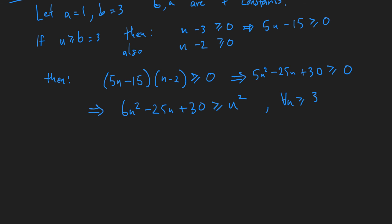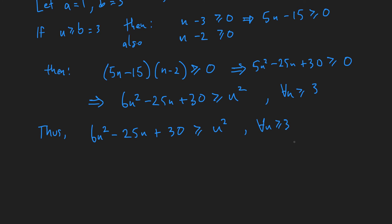So we'll say thus, 6n squared minus 25n plus 30 is greater than or equal to n squared. We kind of have to reiterate here, trying to be a little bit more formal. For all n greater than or equal to 3, we just kind of copied the line. Sometimes you do that in proofs.